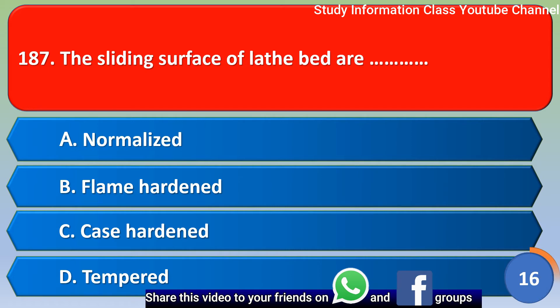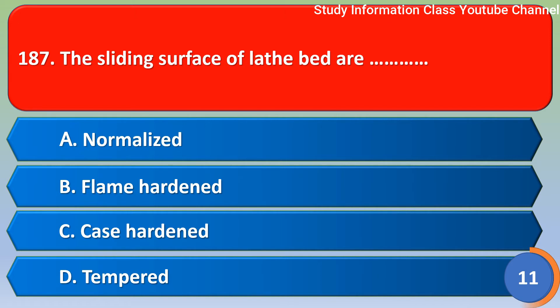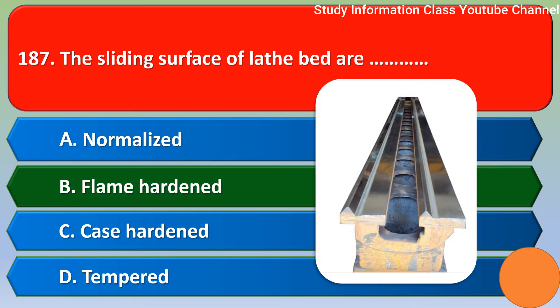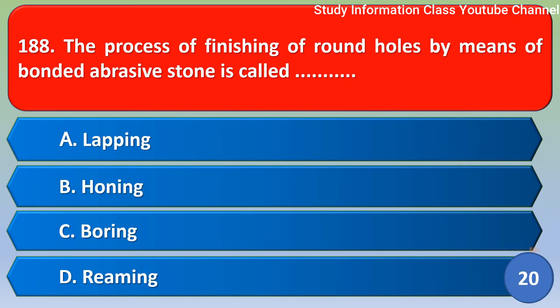Next question: the sliding surfaces of the lathe bed are treated by — option A normalizing, option B flame hardening, option C case hardening, option D tempered. The correct answer is option B — flame hardening.